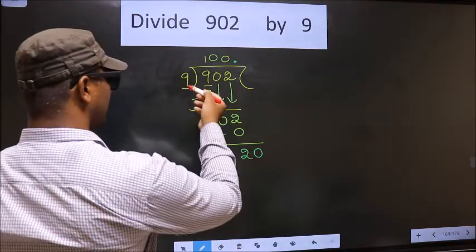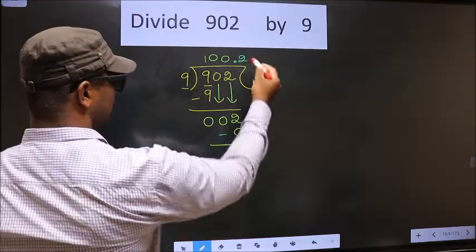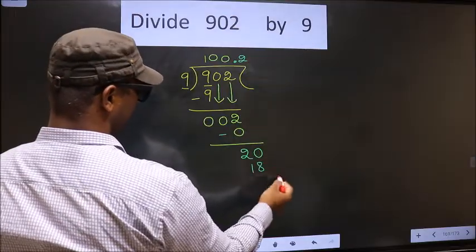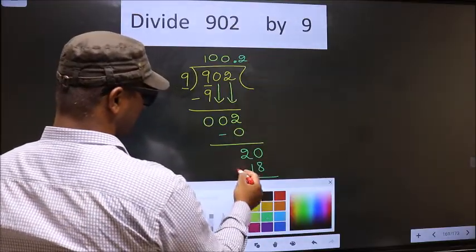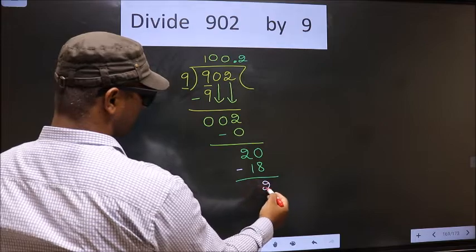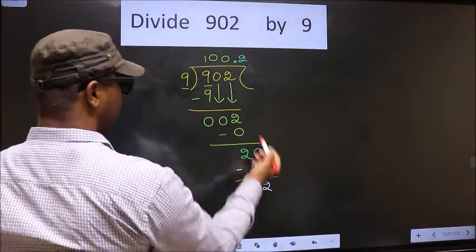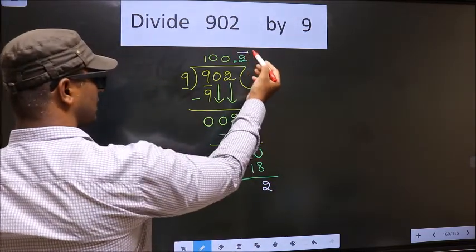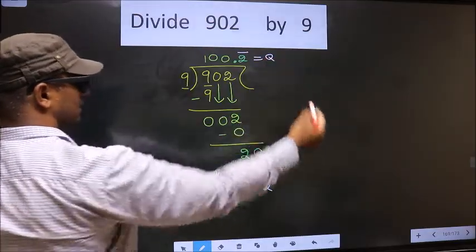A number close to 20 in 9 table is 9, 2 is 18. Now you subtract 20 minus 18, 2. We got 2 again. That means, we get a bar on this number. So this is our quotient.